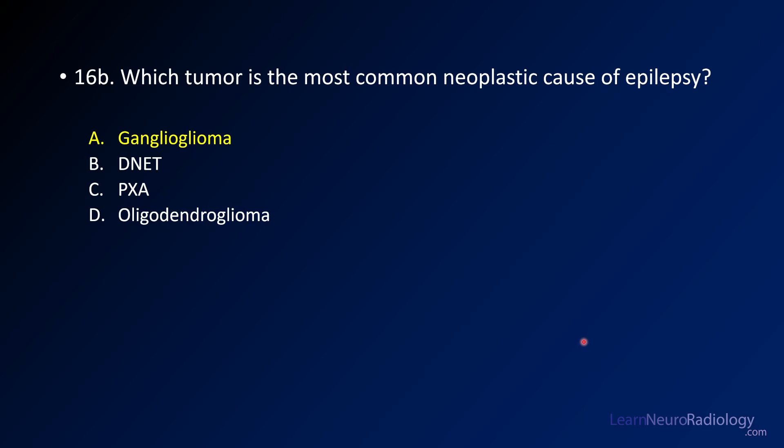Your second question was: what's the most common neoplastic cause of epilepsy? That is ganglioglioma, as in this case — these are the most common tumor causes of epilepsy. Keep in mind that in most cases of epilepsy you won't see anything on MRI, so the overall most common cause is idiopathic epilepsy. Thanks for tuning in to case 16 of the brain tumor review series — four more cases to go, and be sure to like and subscribe.